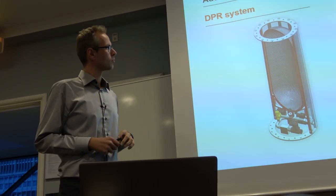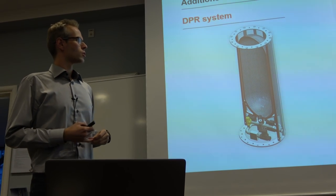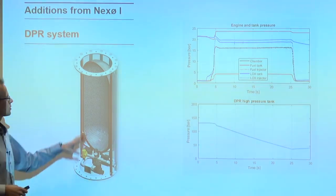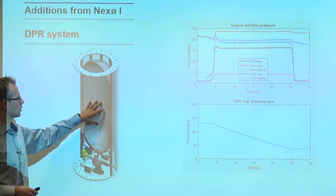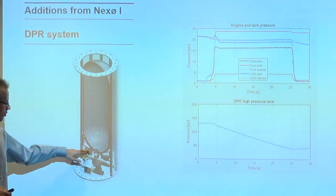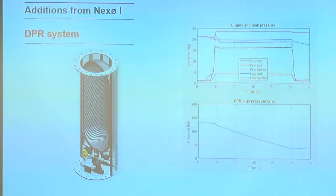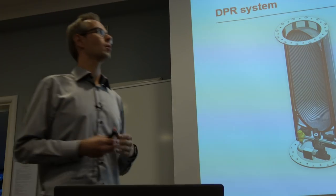The other upgrade we made was the TPR system, or the dynamic pressure regulation system. Hardware-wise it is a tank, 20 liters, 300 bars. And then it has a main on-off valve down here and then the two regulation valves. That will feed the two propellant tanks, the fuel tank and the LOX tank with helium.